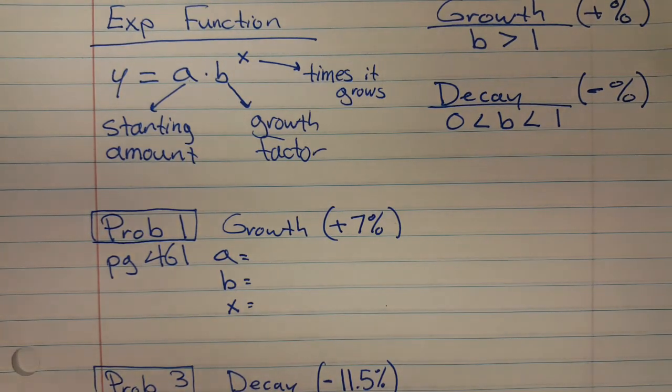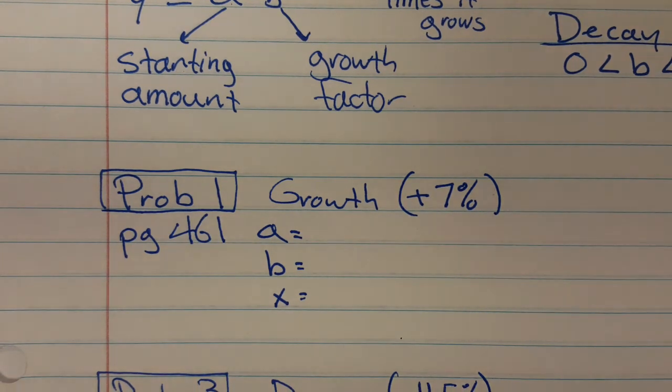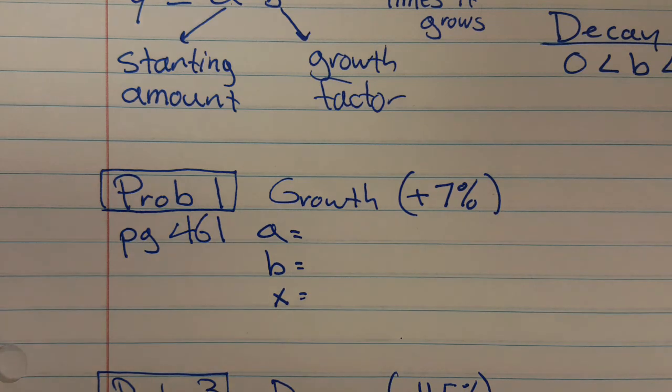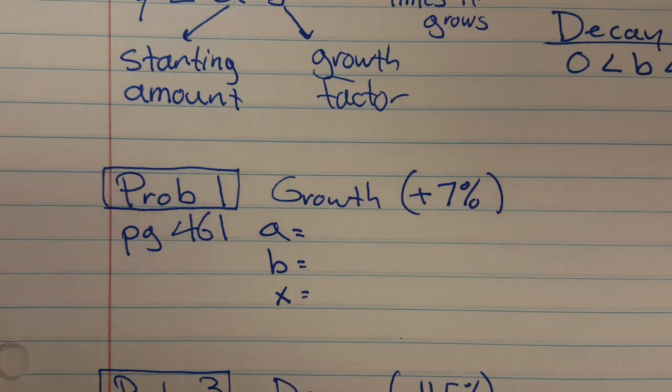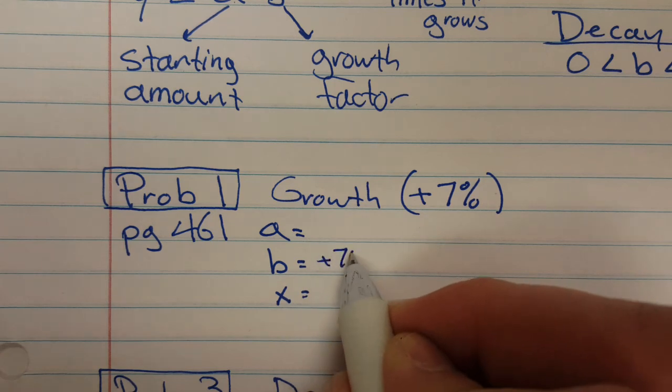This is a growth problem. How do I know? Because you're growing by seven percent. So here's the story. It says, since 2005, the amount of money spent at restaurants in the United States has increased by about seven percent each year.